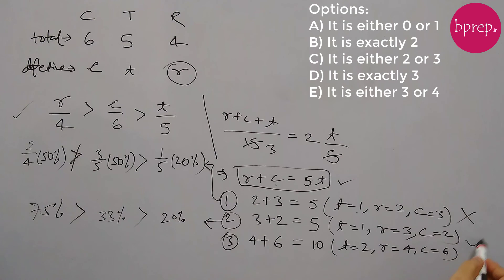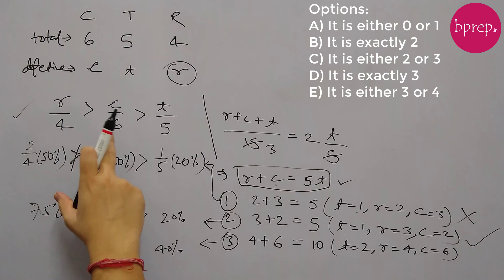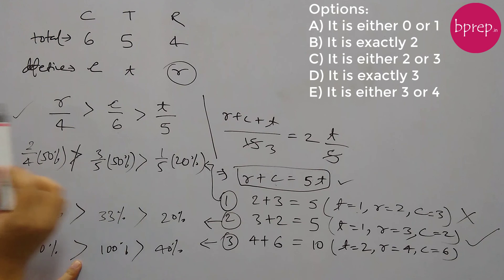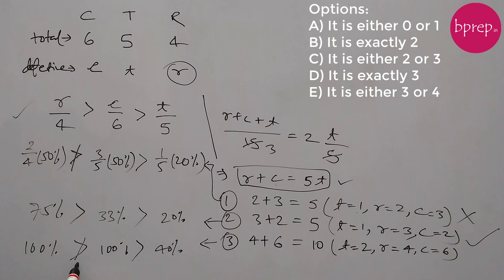Now let's validate the last set: t equals 2, r equals 4, c equals 6. T by 5 is 40%. C is 6, so 6 by 6 is 100% — still valid. But r is 4, so 4 by 4 is also 100%. The proportion of defective rubber balls should be greater than that of defective cricket balls, but 100% is not greater than 100%. So this set is also not satisfying the condition and is not possible.